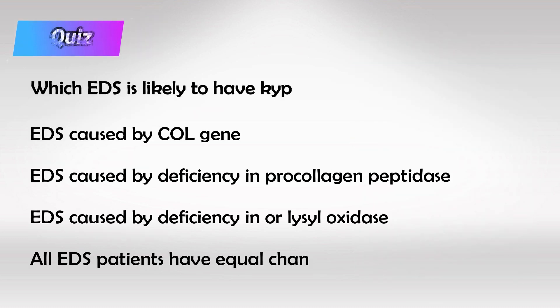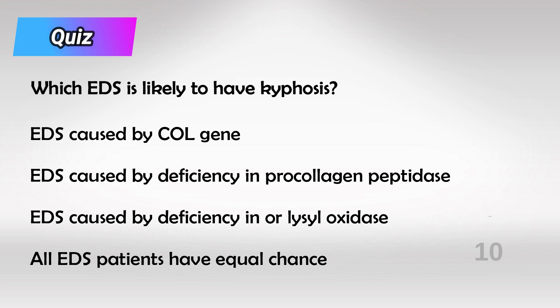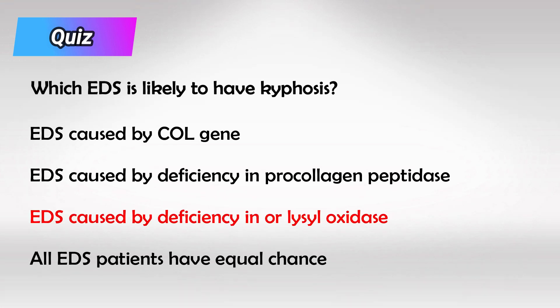Here's a small quiz: In which of the following patients with Ehlers-Danlos syndrome do we see kyphosis? We see it in a patient with defective lysyl oxidase enzyme.